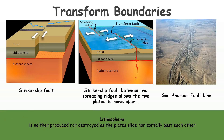Transform Boundaries are where the lithosphere is neither destroyed nor produced, as the plates slide horizontally past each other. The famous example of transform boundaries is the San Andreas Fault line.